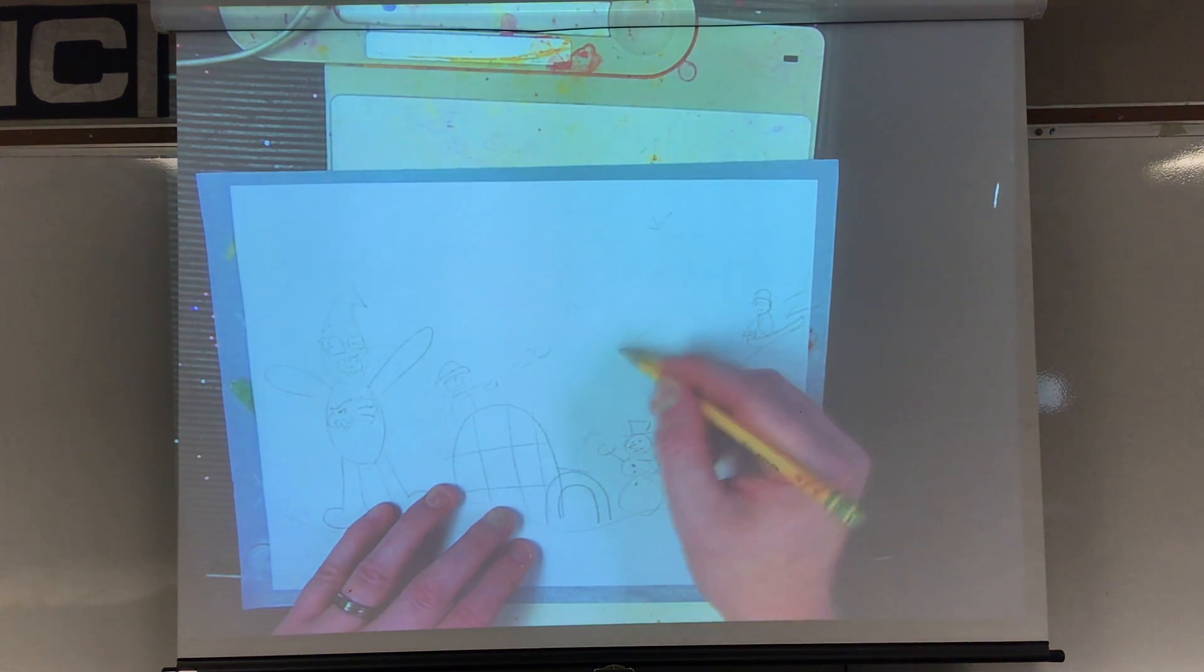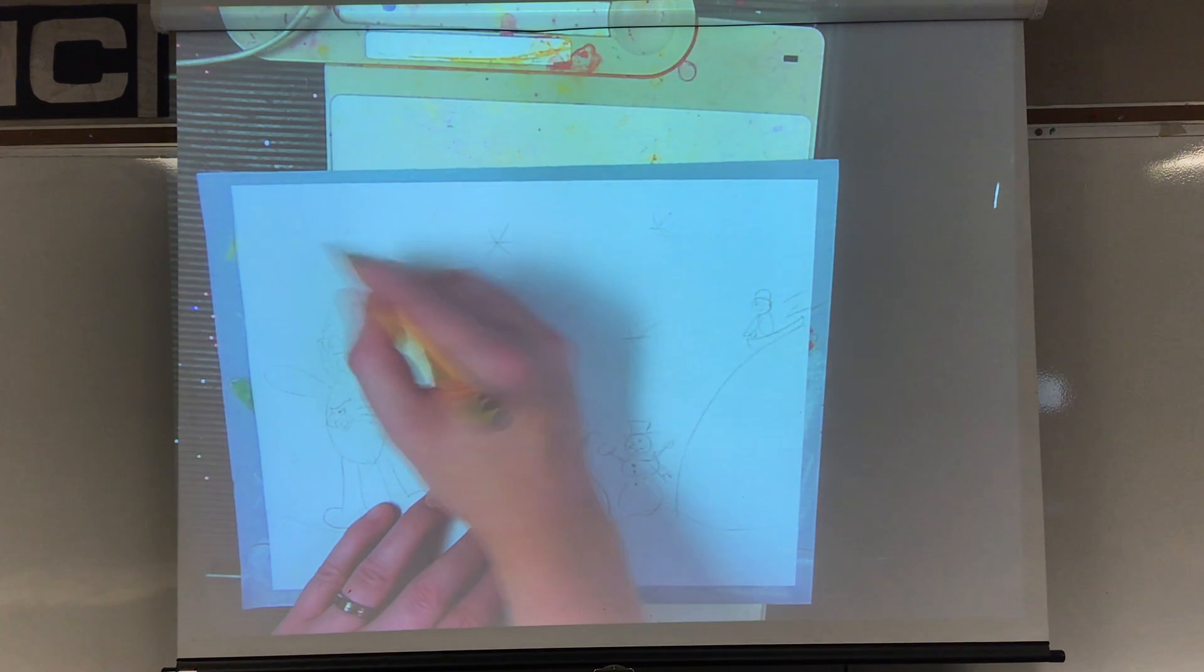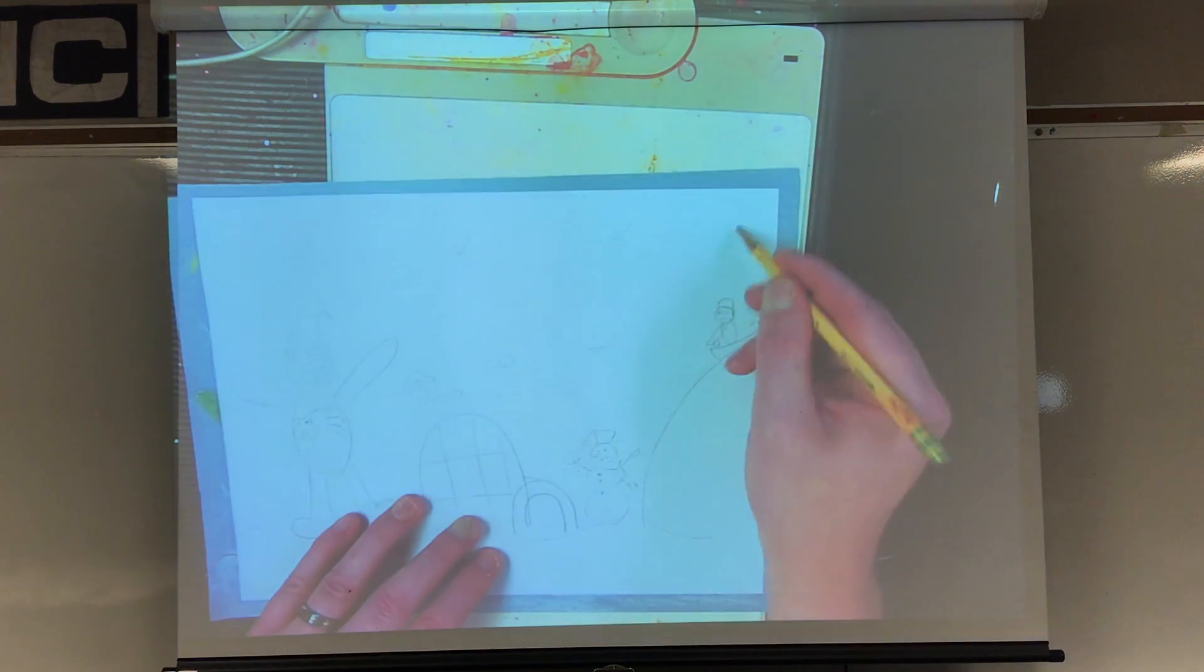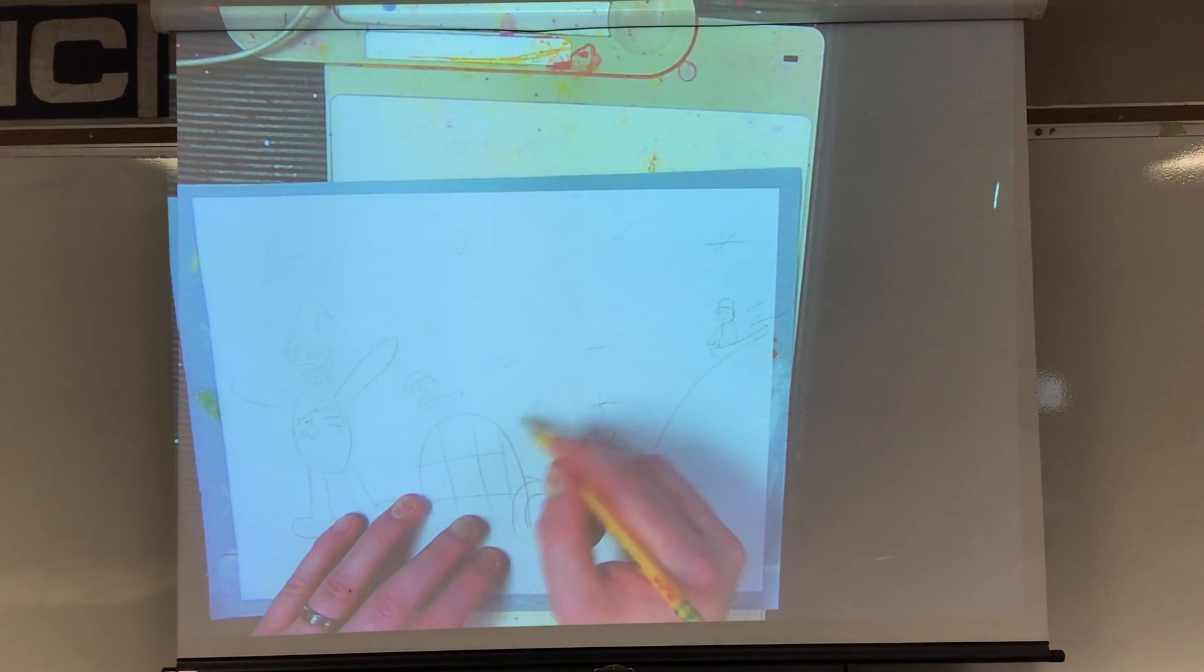And then you can add snowflakes coming down, Xs with lines through it. Just like that.